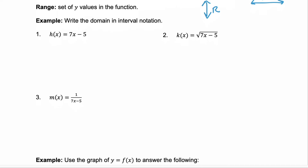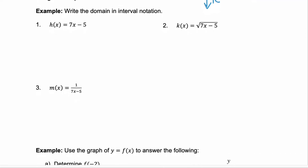Let's write the domain of three functions in interval notation. The first function, 7x minus 5, is a line. Because it's a line, there isn't anything that needs to be excluded. The domain is going to be all real numbers, and in interval notation that's from negative infinity through infinity.